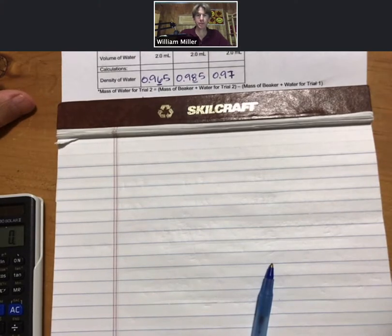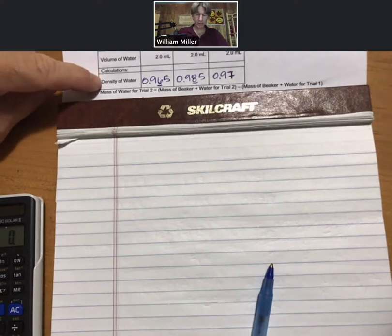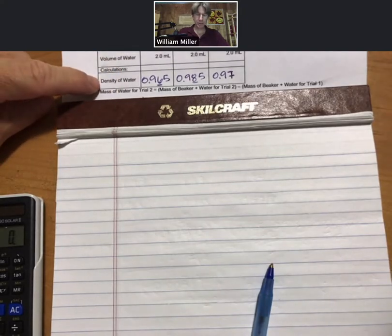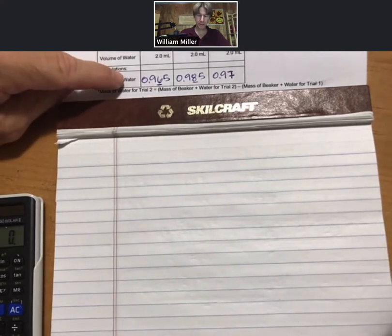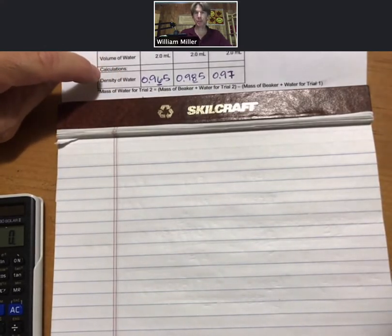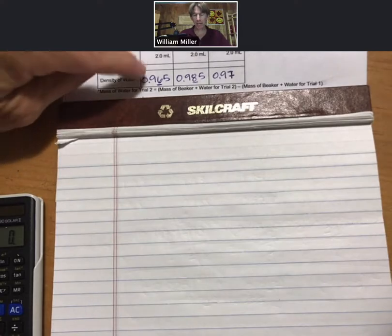This is experiment one basic techniques: calculate the average and standard deviation. We've got from our calculations three density values here. We want to take the average of them. Of course, the average is add them all up and divide by how many numbers there are.